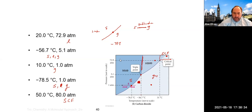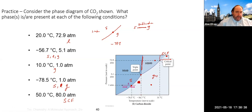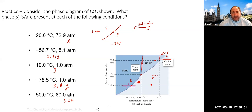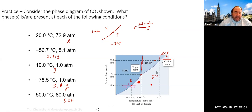Last time we finished up talking about phase changes and what is going on during phase changes. We talked about the energy required to do those phase changes. When we go from solid to liquid, liquid to gas, or even solid directly to gas, skipping the liquid phase, these things occur at the same temperature. Melting and freezing occur at exactly the same temperature.